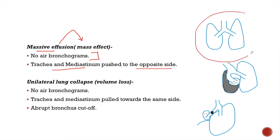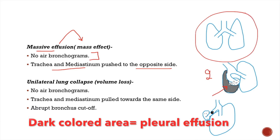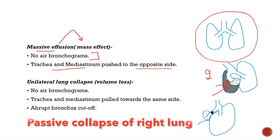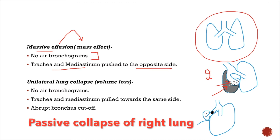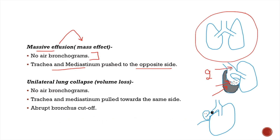This is the normal lung, and in the second image we can see that there is effusion on the right side. This effusion has caused mass effect with passive collapse of the right lung. It is causing deviation of the trachea towards the left side, and the mediastinum is also shifted towards the left side.